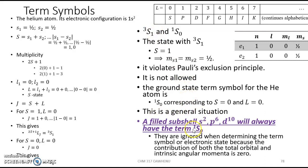This is a general situation for all filled subshells, such as s², p⁶, d¹⁰, f¹⁴, and so on — they will always have the term symbol ¹S₀ (singlet S zero). As a result, all filled subshells are ignored when determining the term symbol or electronic states. This applies to molecules as well, since there is no contribution to the total orbital angular momentum, total spin, or total angular momentum from a filled subshell. In the next video we will work additional examples on term symbols.